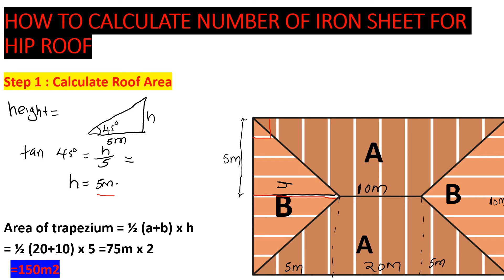Now we can find the area of the trapezium — section AA. Area of a trapezium = ½ × (a + b) × height. Here, a = 20 m (full length), b = 10 m (ridge length), and height = 5 m. So: ½ × (20 + 10) × 5 = 75 m². We multiply by 2 because we have a trapezium on each side, giving 150 m².